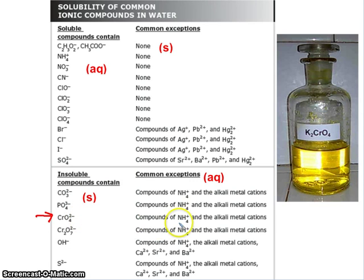So we check the exceptions. Well, our cation is K, potassium, which is an alkali metal. So this is aqueous right here, because potassium chromate is an exception to the solubility rules.